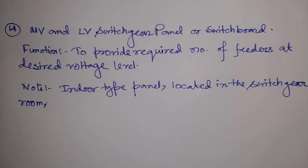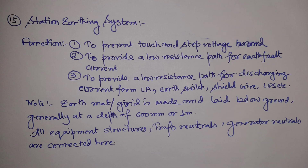The next item is the MV and LV switchgear panel or switchboard. It is used to provide the required number of feeders at the desired voltage level. For example, if you need five 11 kV feeders, you will have an 11 kV switchboard with five outgoing feeders using vacuum circuit breakers and necessary protection. For LT, as mentioned in the auxiliary power video, it is required to supply the isolator, circuit breaker, and DC power needs. These auxiliary switchgear panels are generally indoor type and located in the switchgear room.